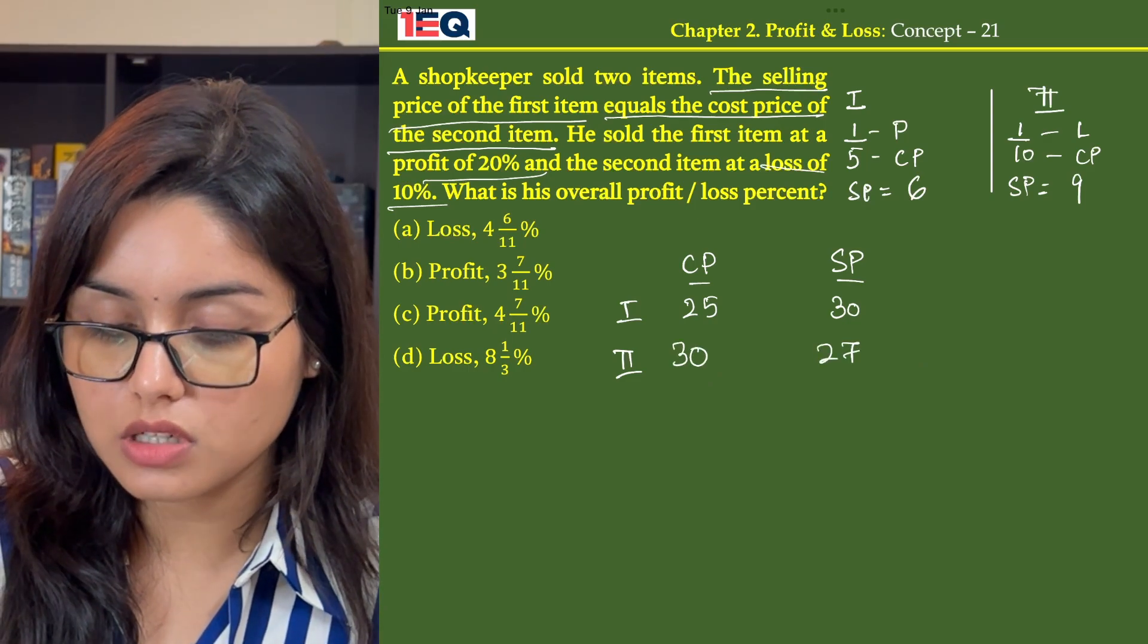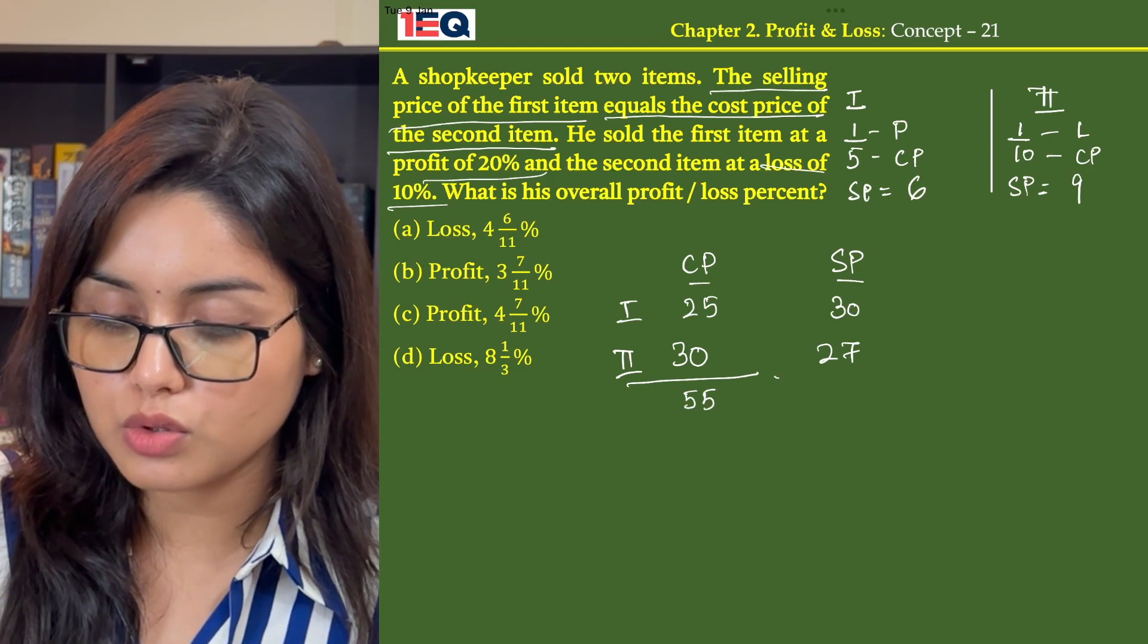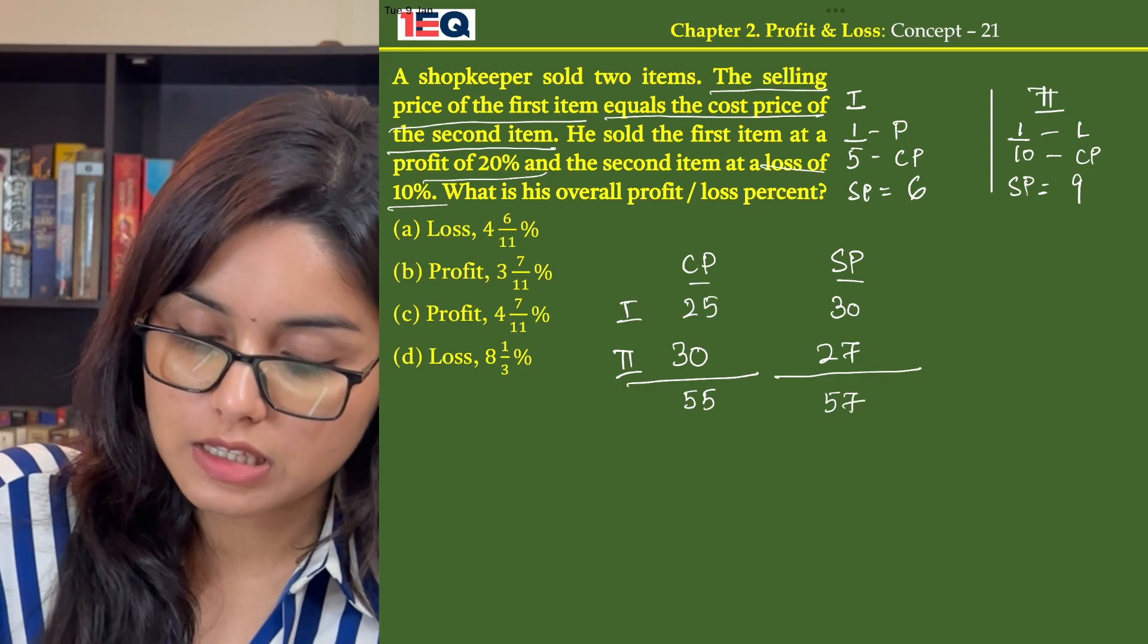Now my total CP is rupees 55 and my total SP is rupees 57. So what is my profit amount?